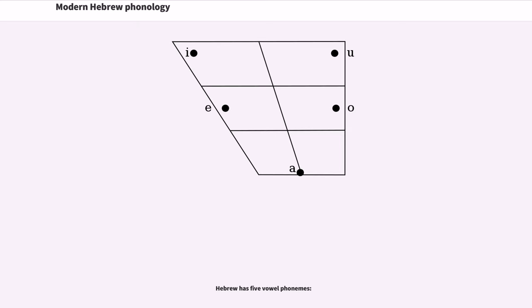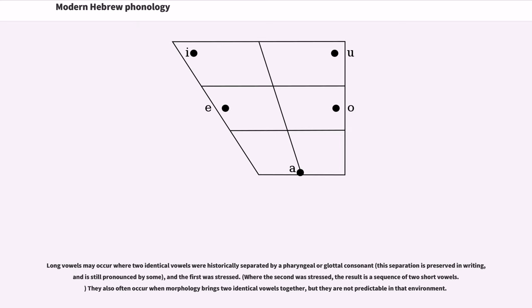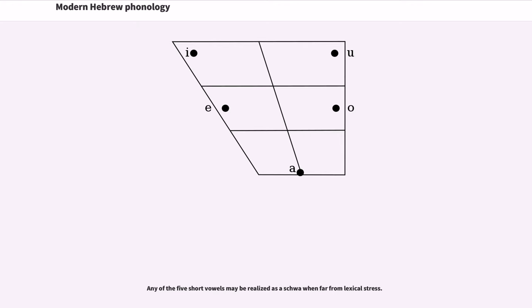Hebrew has five vowel phonemes. Long vowels may occur where two identical vowels were historically separated by a pharyngeal or glottal consonant. This separation is preserved in writing, and is still pronounced by some, and the first was stressed. Where the second was stressed, the result is a sequence of two short vowels. They also often occur when morphology brings two identical vowels together, but they are not predictable in that environment. Any of the five short vowels may be realized as a schwa when far from lexical stress.